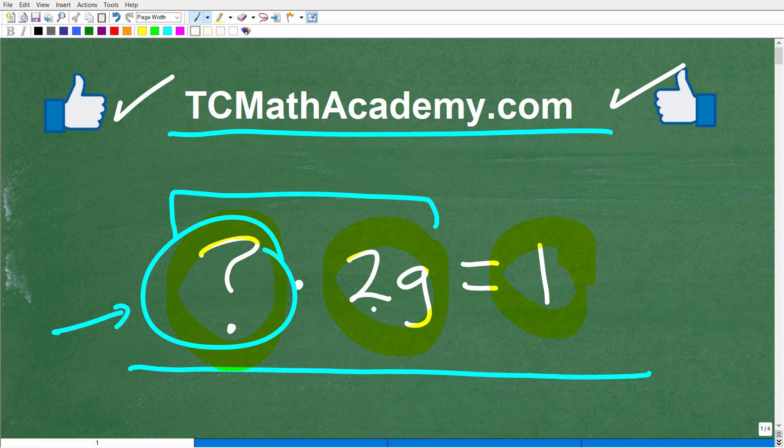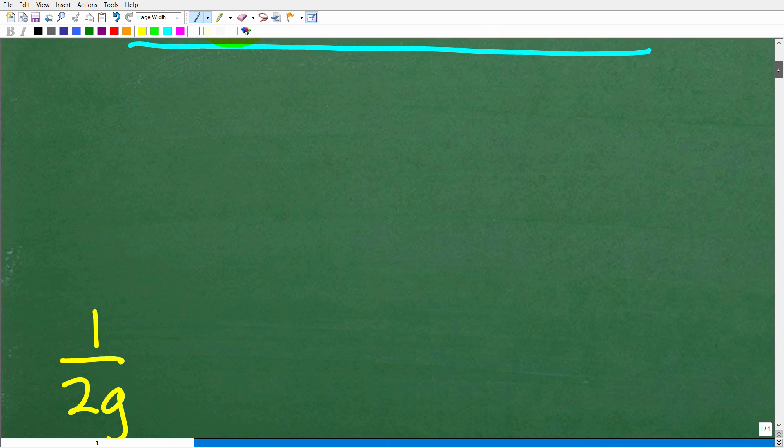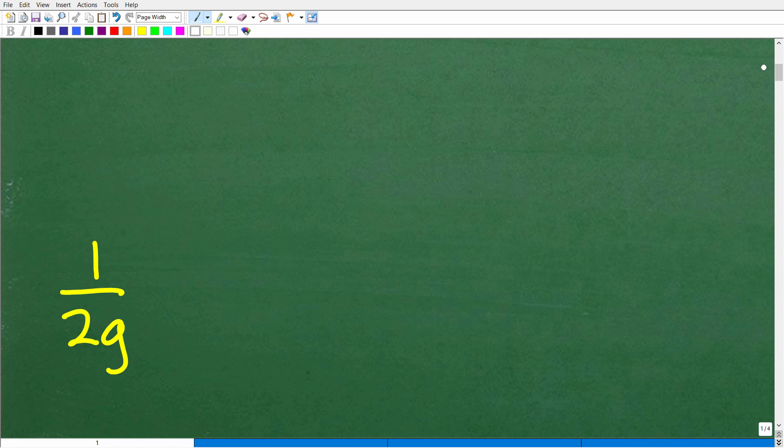Okay, so something times 2g is equal to 1. What is this something? Well, the correct answer is the following: 1 over 2g.